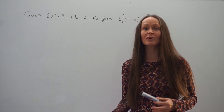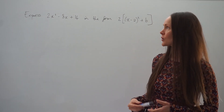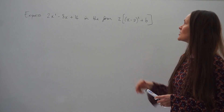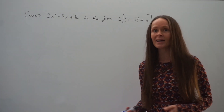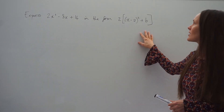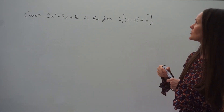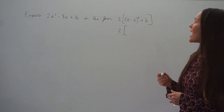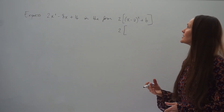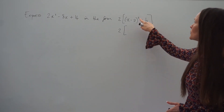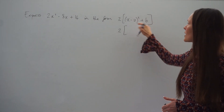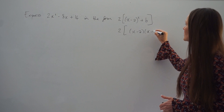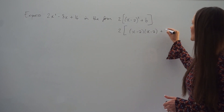So in this exam question, we're going to use the same method I just showed you to express this quadratic in the given form. We need to start by expanding the brackets on the right-hand side. I'm just going to leave the number 2 at the front as it is for the moment, and expand everything inside the square brackets. This square just means I'm multiplying the brackets x minus a by themselves. Don't forget to write down your plus b here.